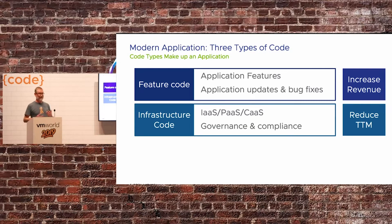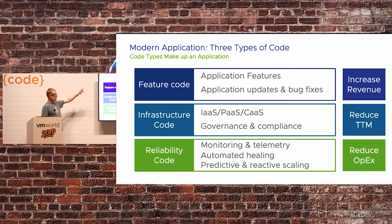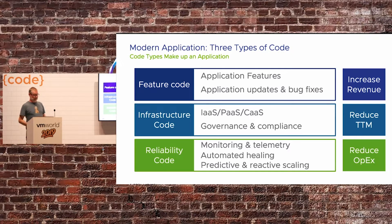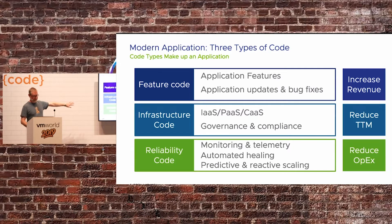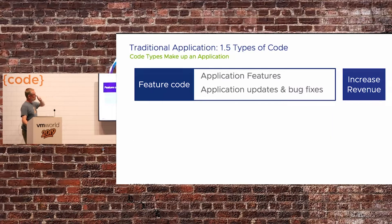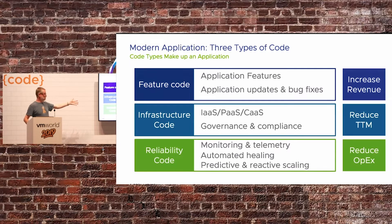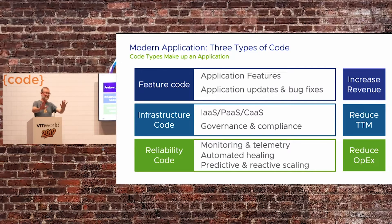Then there's a third type: reliability code. So there are three types — feature, infrastructure, and reliability. Reliability code is the stuff that makes sure the application continues to operate. If it fails, we need it to restart. If it's having connectivity problems, we need the telemetry to help identify why, or we need to identify where latency is really poor. In a modern application, you will be writing more infrastructure and reliability code, and working with developers. You will be upskilling and contributing in all of these areas.